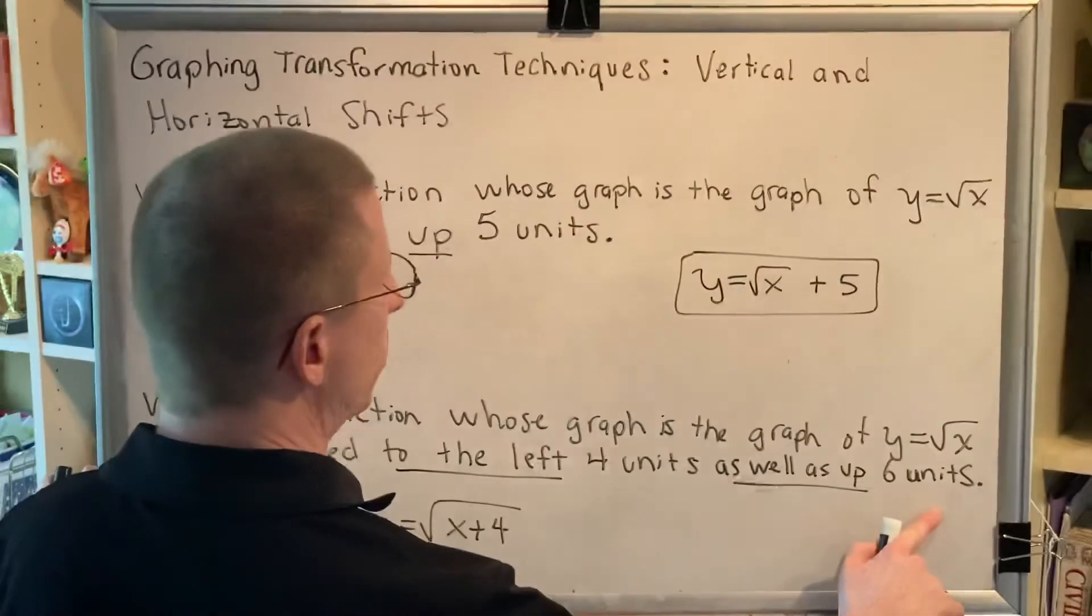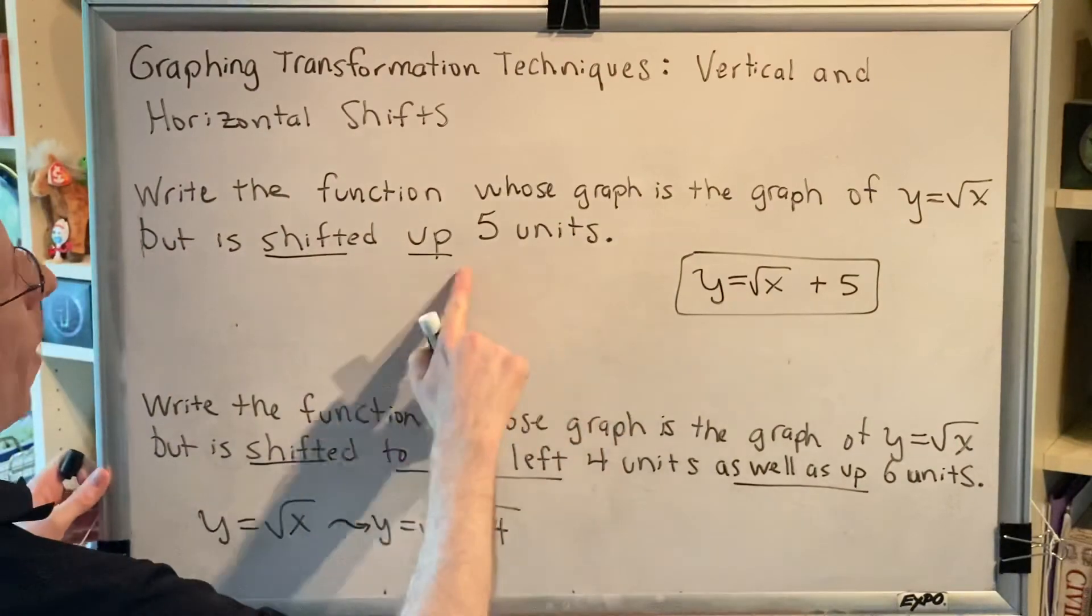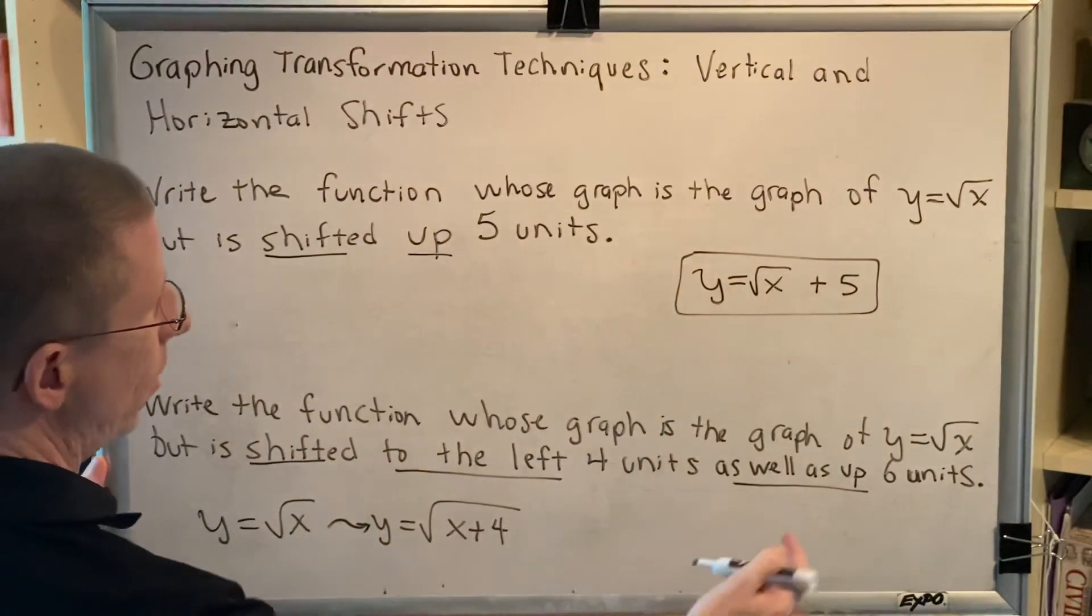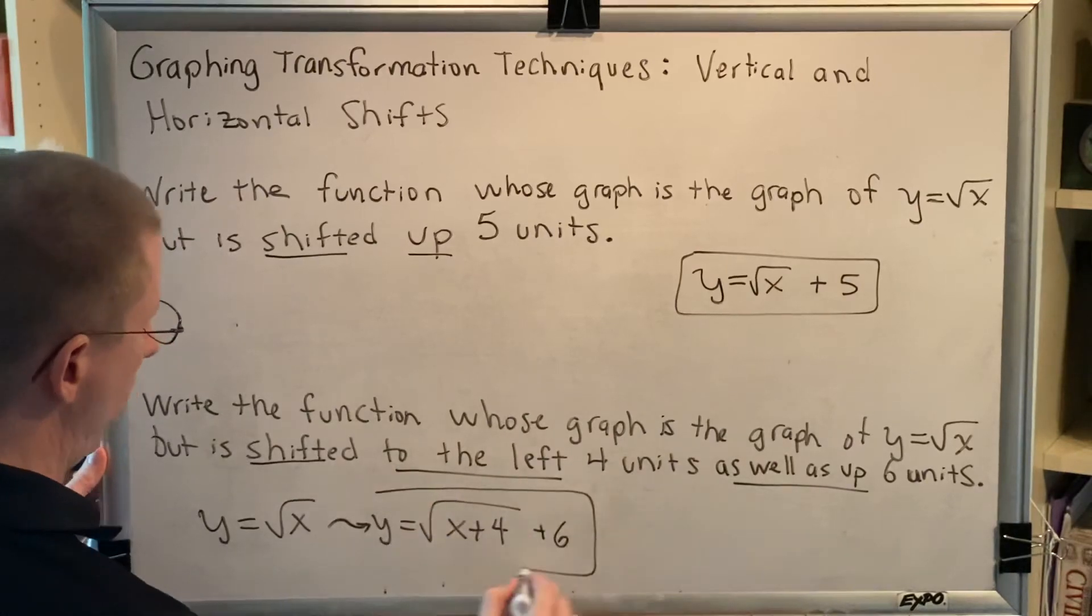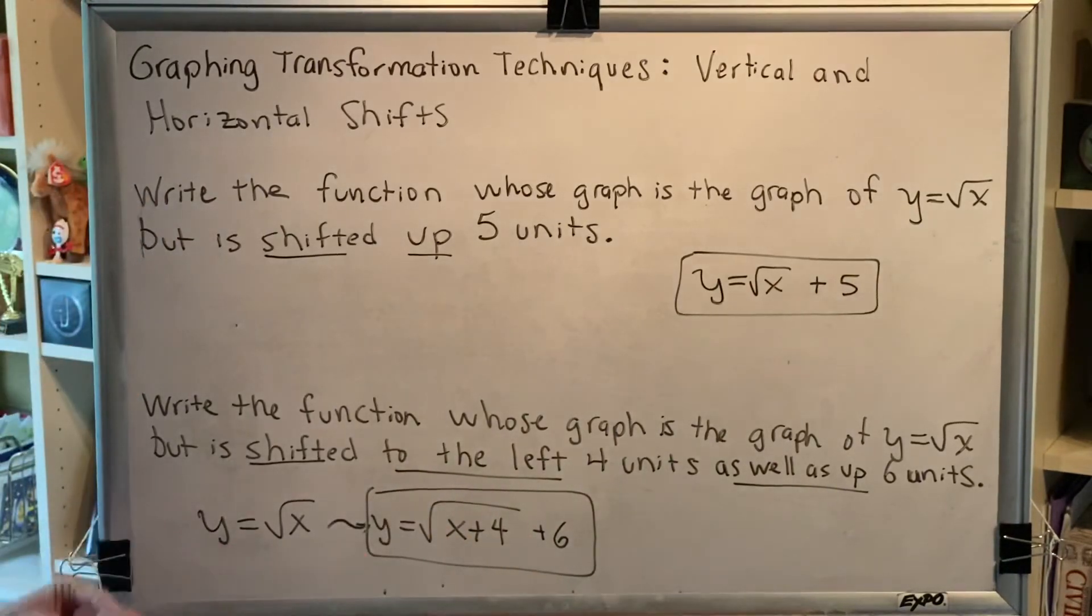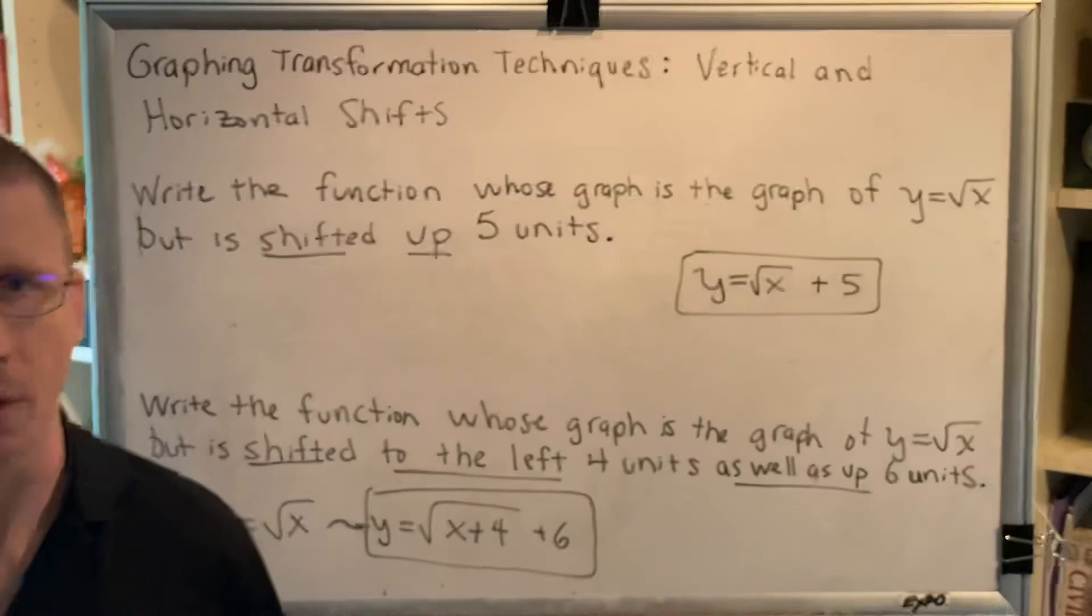Now I also need to do the up six part of this. Well just like up five, you put plus five at the end, for up six you put plus six at the end. So our new equation is shown here. Alright, we've solved two problems.